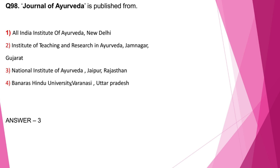Question number 98: Journal of Ayurveda is published from? The correct answer is option 3, NIA Jaipur, Rajasthan. The journal AYU is from ITRA Jamnagar. The journal AYU Care is from All India Institute of Ayurveda, New Delhi. And the Journal of Scientific Research (JSR) is from BHU.